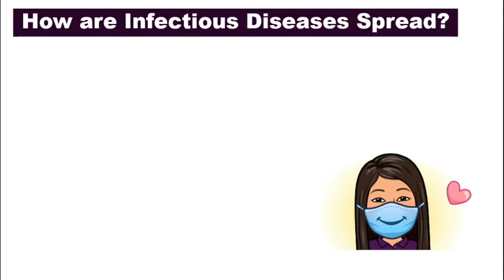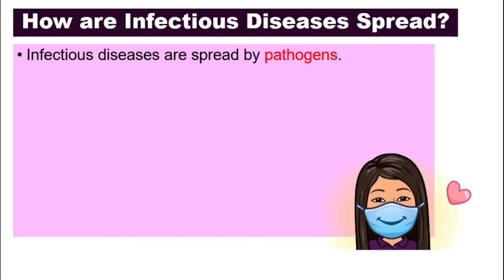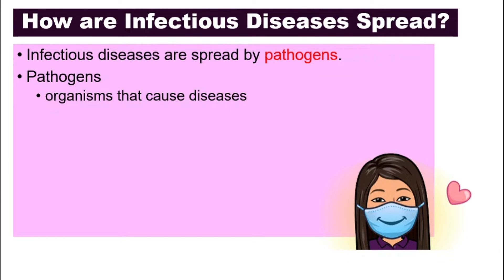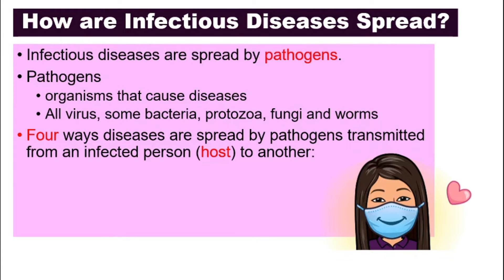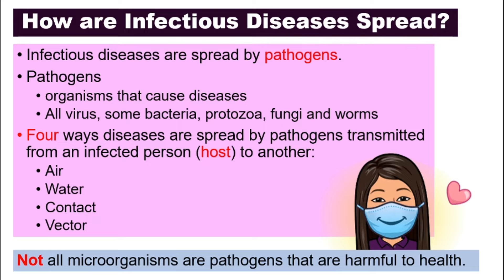How are infectious diseases spread? First of all, we need to know what pathogens are — they are spread by pathogens. Pathogens are organisms that cause diseases. All forms of virus are pathogens, and some bacteria, protozoa, fungi, and also worms — they are all pathogens. There are four ways pathogens can be transmitted: air, water, contact, and also vector. Note that not all microorganisms are pathogens; there are certain bacteria in the human body that are actually useful and helpful for us.